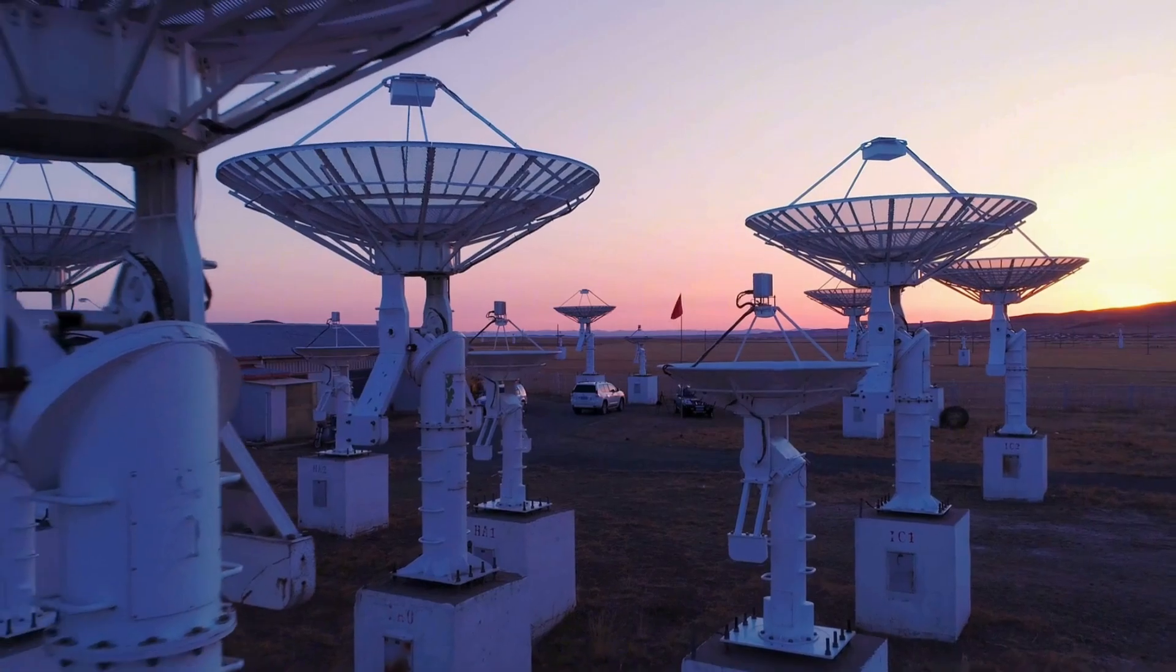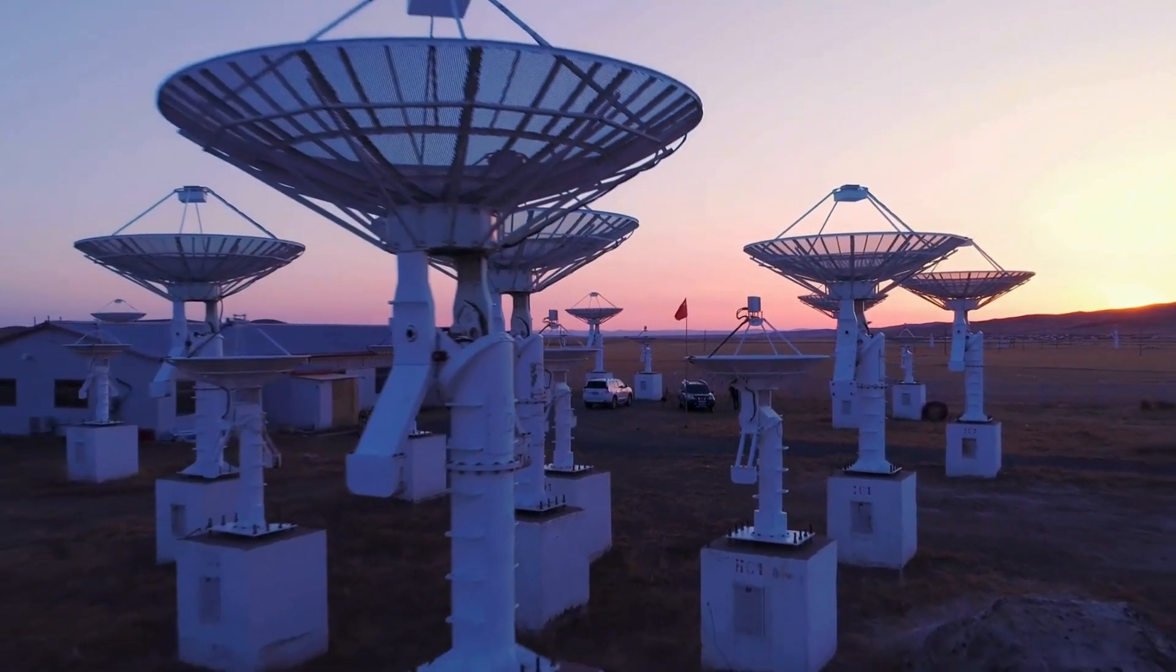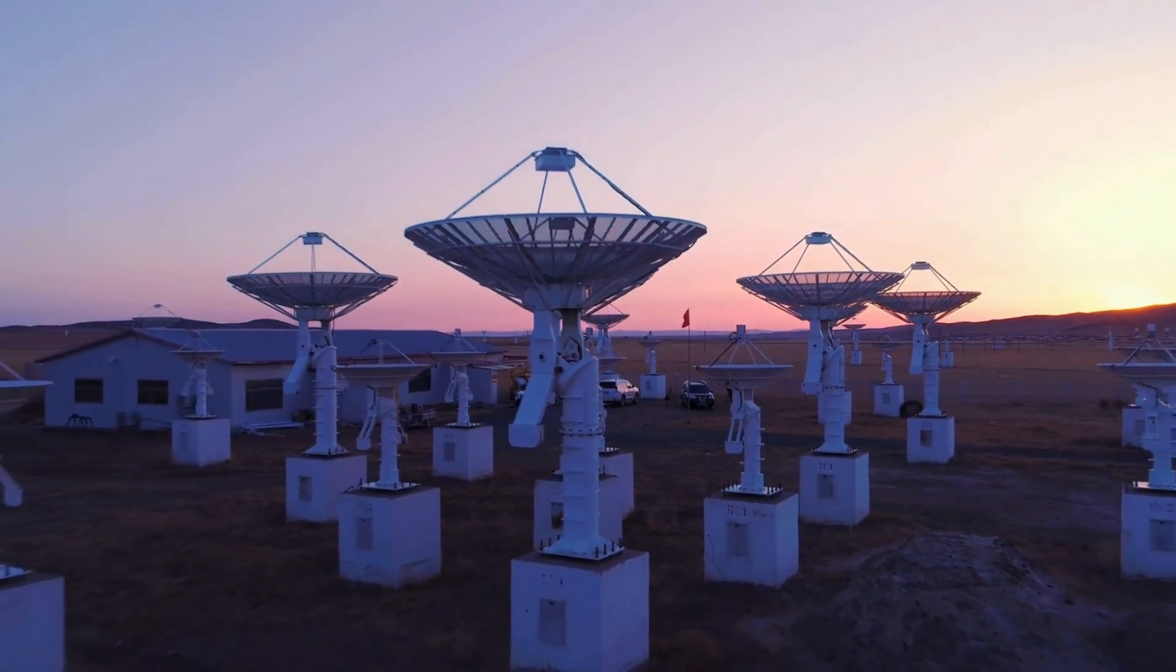Discovered by the Subaru Telescope at Mauna Kea Observatory in Hawaii, this object, named ammonite, has a diameter between 220 and 380 kilometers.